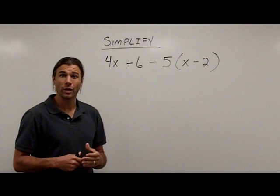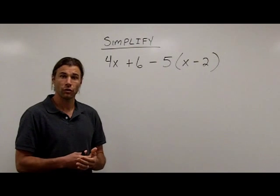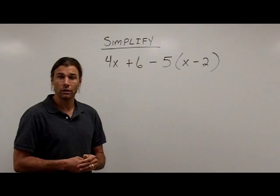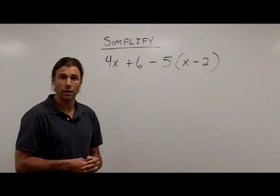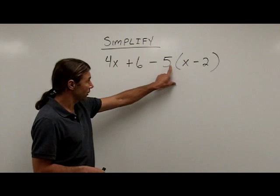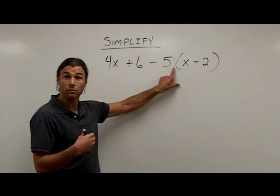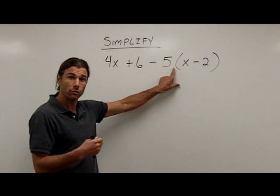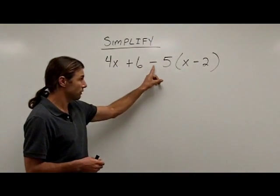The only difference here is that when we have variables, we're going to have to be careful about combining only the like terms when we get to the addition or subtraction part of the problem. So you'll notice I have addition, subtraction, and right here with the 5 next to the parentheses tells me that's multiplication. So I'm going to perform the multiplication before I perform the addition or subtraction.